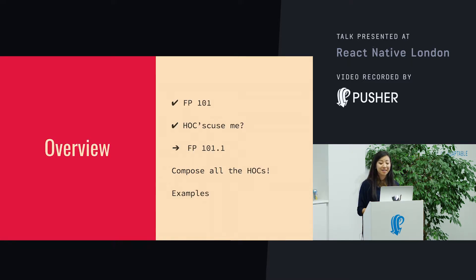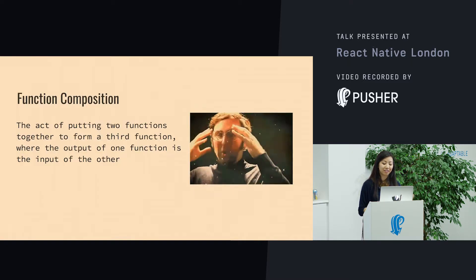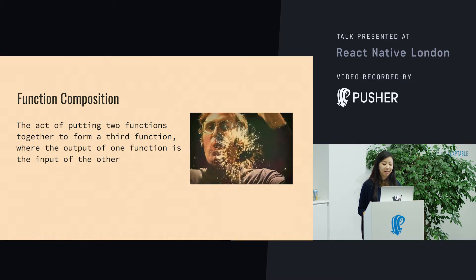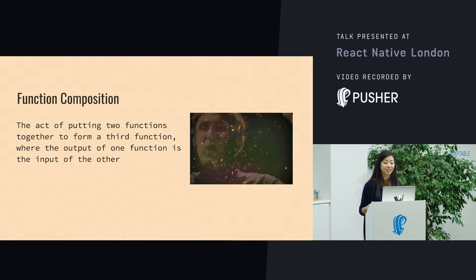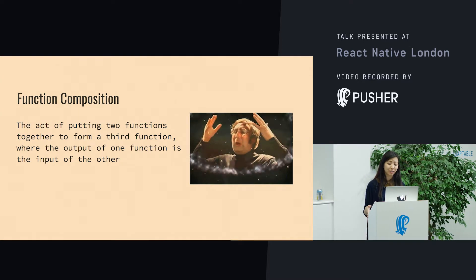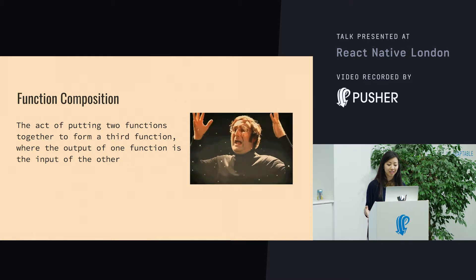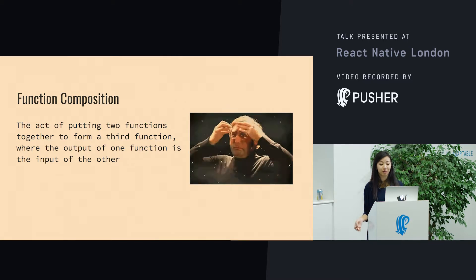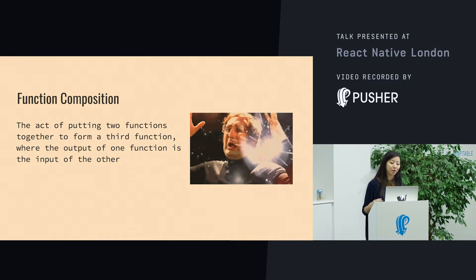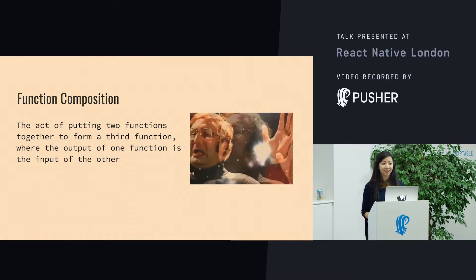We're going to take a step back into functional programming to cover one last thing: function composition. It's the act of putting two functions together to form a third function, where the output of one function is the input of another.